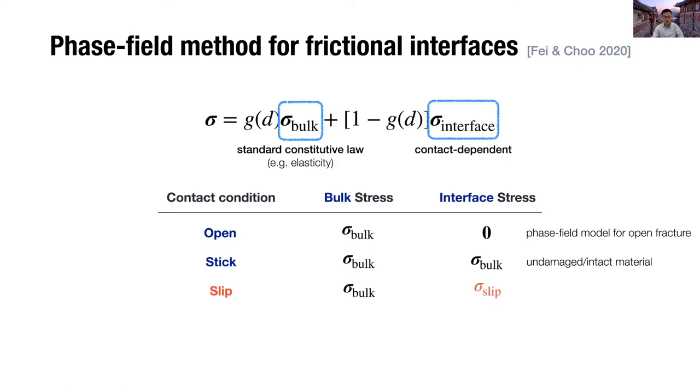The most interesting condition is the slip condition, where there's sliding inside the interface. In this case, we calculate the stress tensor, which is denoted by sigma slip, as a sum of sigma friction and sigma no penetration.